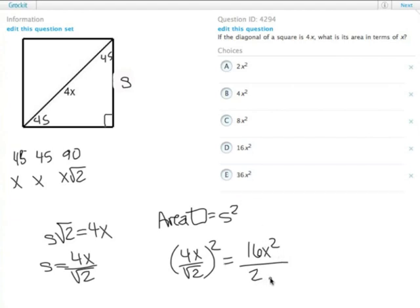Therefore, its area in terms of x is, we divide by 2, 16 divided by 2 is 8, so it ends up being 8x squared. Answer choice B.